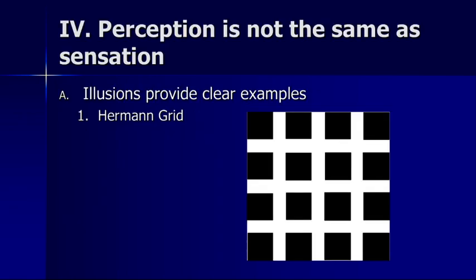Let's start by talking about how perception is not the same as sensation. Some of the easiest ways to demonstrate that what you see is not an accurate representation of the world are in illusions. This is a classic example called the Hermann grid. If you focus on one of the intersections, you can see it's white. But if you're not focusing on an intersection, you can see shading right at those intersections. This illusion is created by neural processes related to receptive fields. It demonstrates that we're seeing something that's not there.